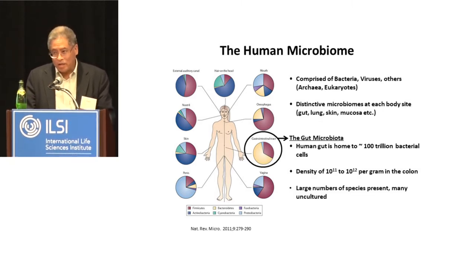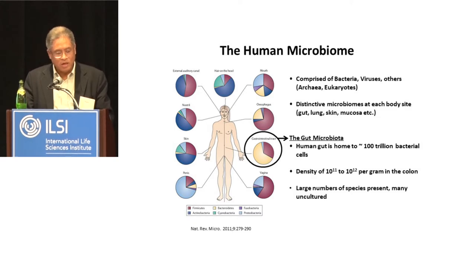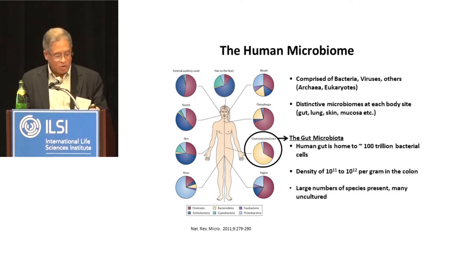The gut microbiota is particularly unique in terms of composition and microbial density. It's one of the richest and most densely populated microbial communities on earth. Many of these organisms are difficult to culture, although microbiologists have gotten better at this over the years.